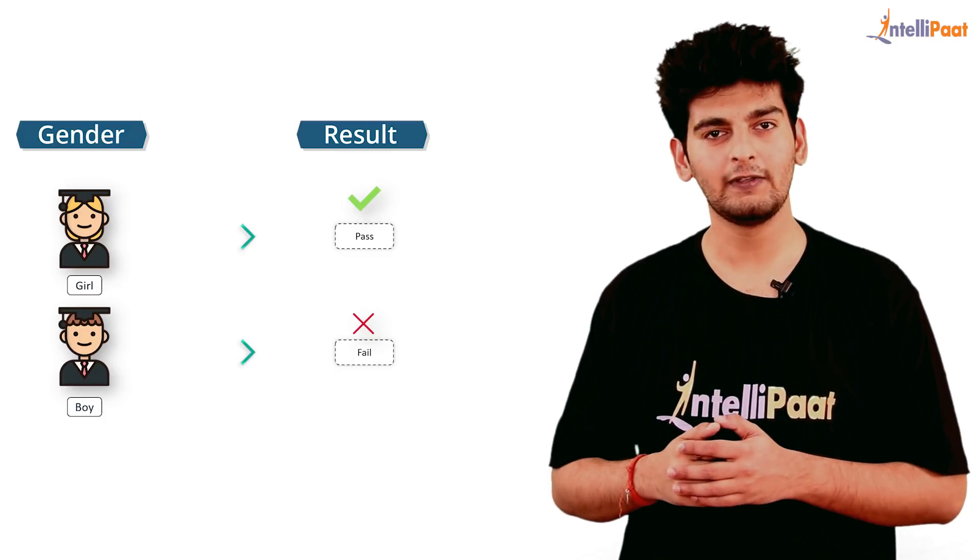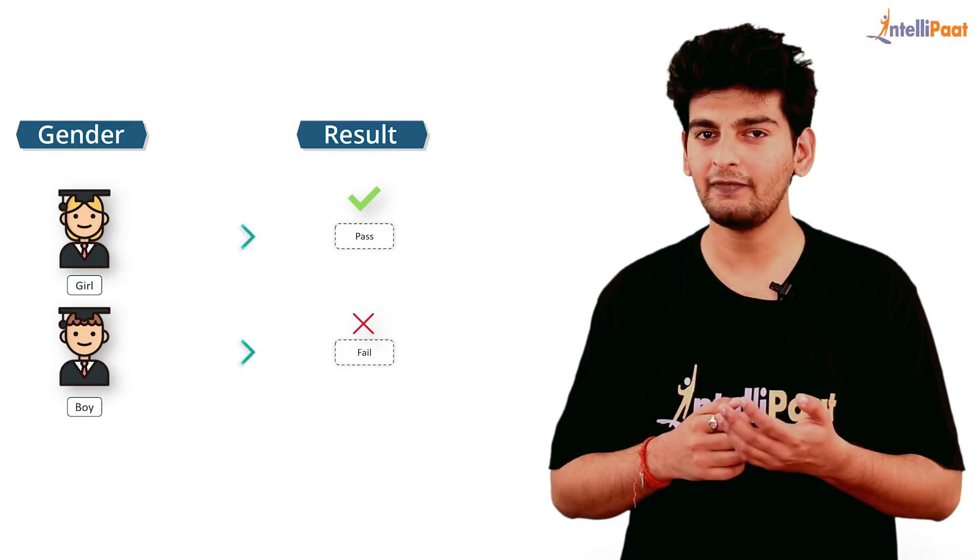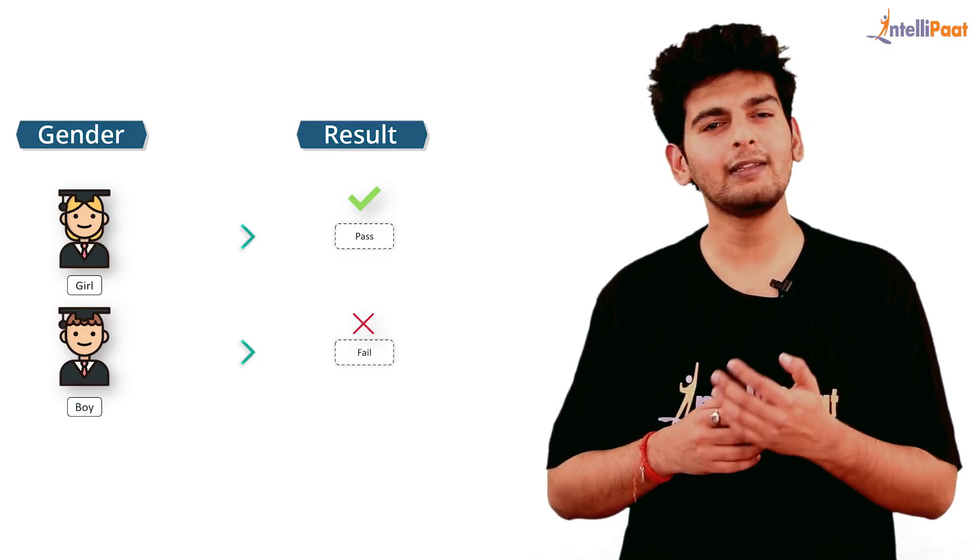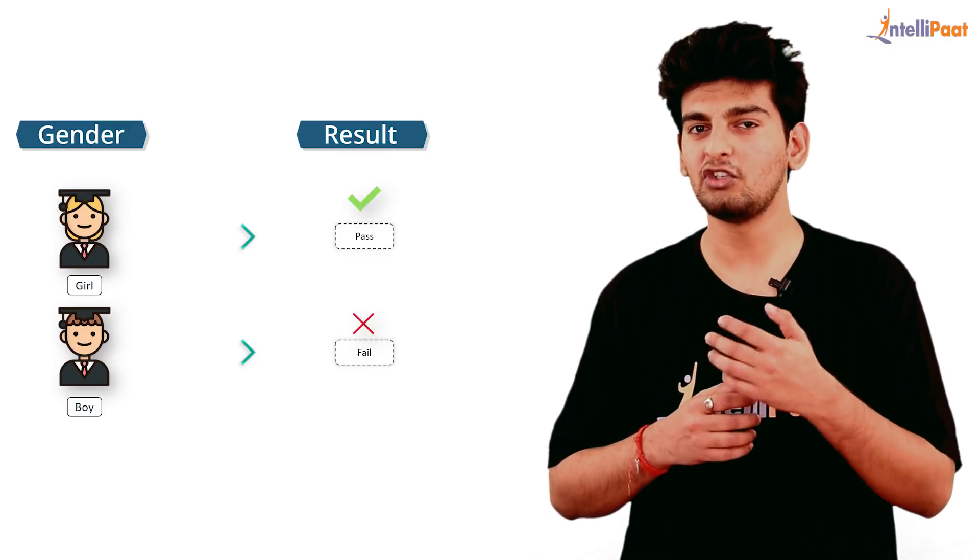So over here we have gender of the student and the result of the student. So gender is the independent variable and result is the dependent variable, and we're trying to determine whether the student will pass the exam or not on the basis of the gender of the student. Or in other words, we are basically trying to classify the data.